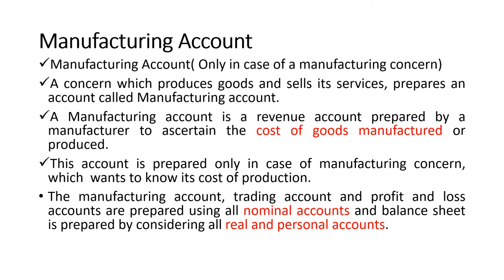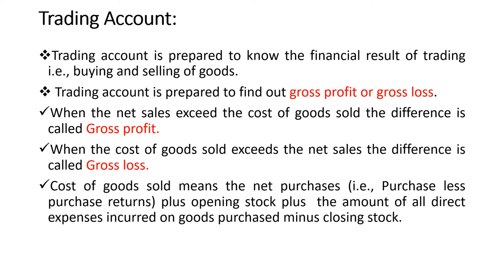We also need to consider sale of raw material, as well as opening stock and closing stock of work-in-process. The manufacturing account, trading account, and profit and loss account are prepared using all nominal accounts, and the balance sheet is prepared by considering all real and personal accounts. The balance sheet is based on the rules: real account says debit what comes in, credit what goes out; and personal account says debit the receiver, credit the giver.